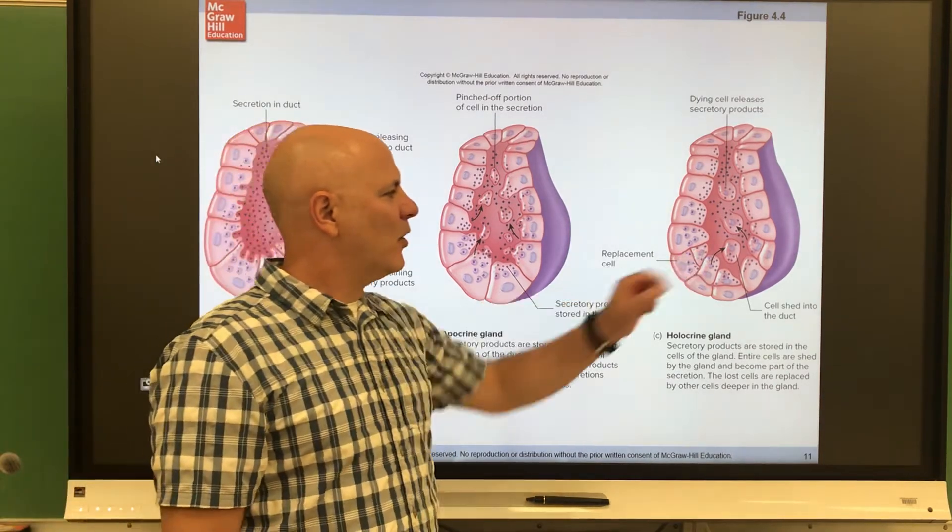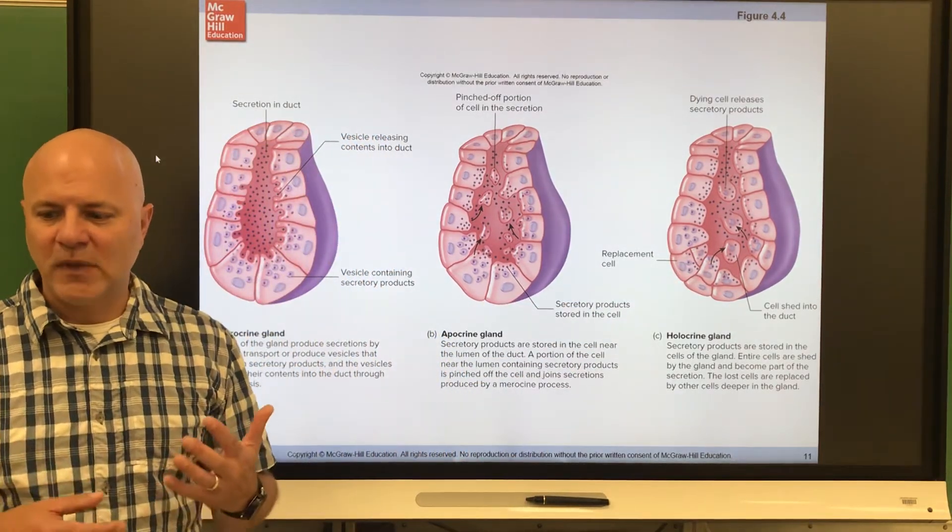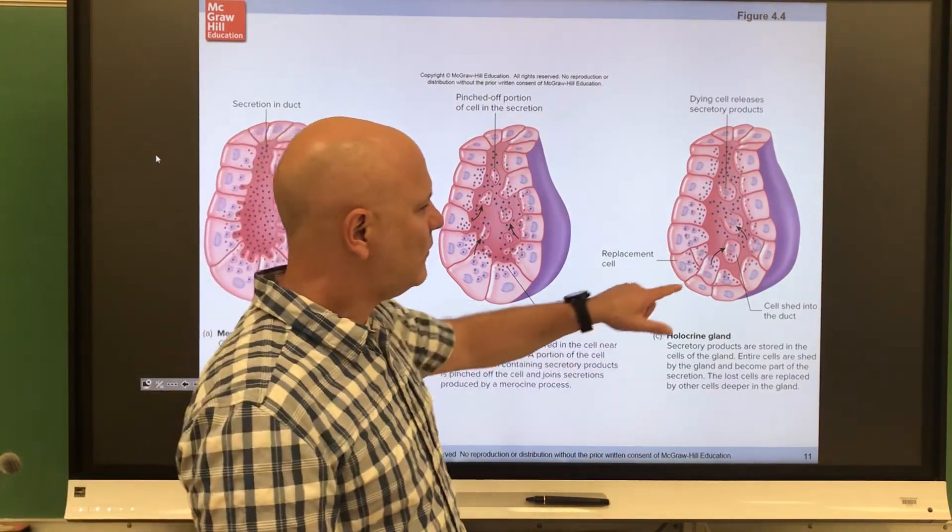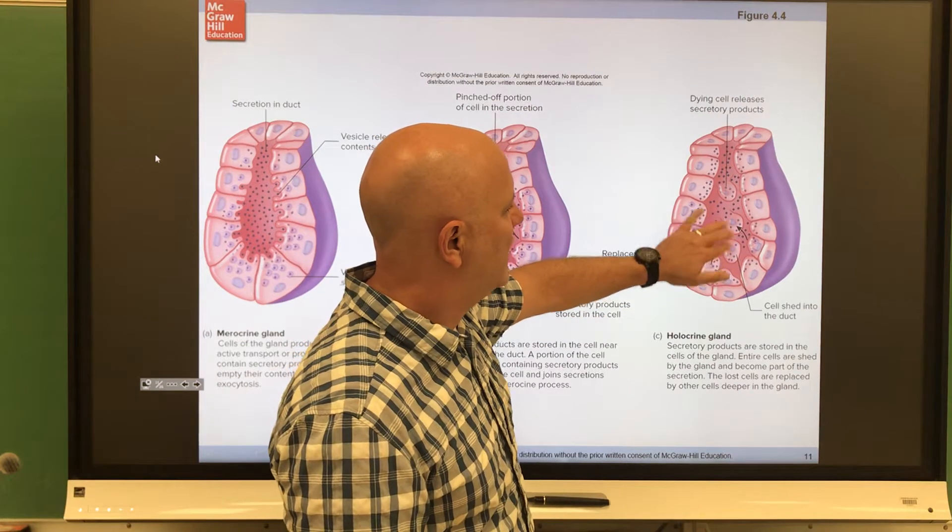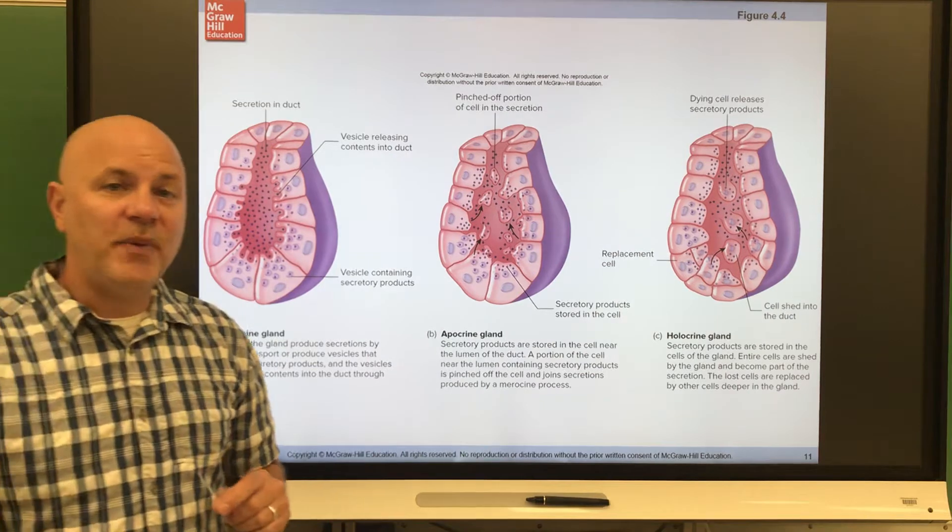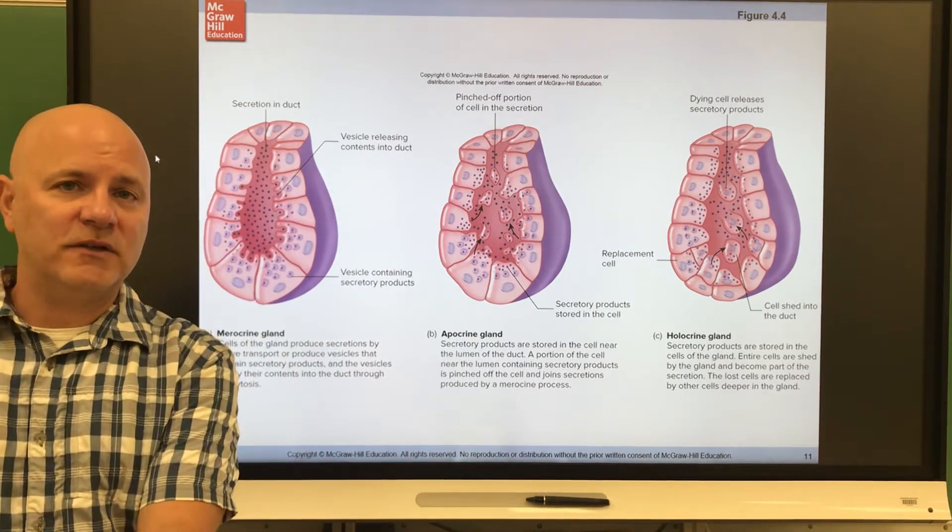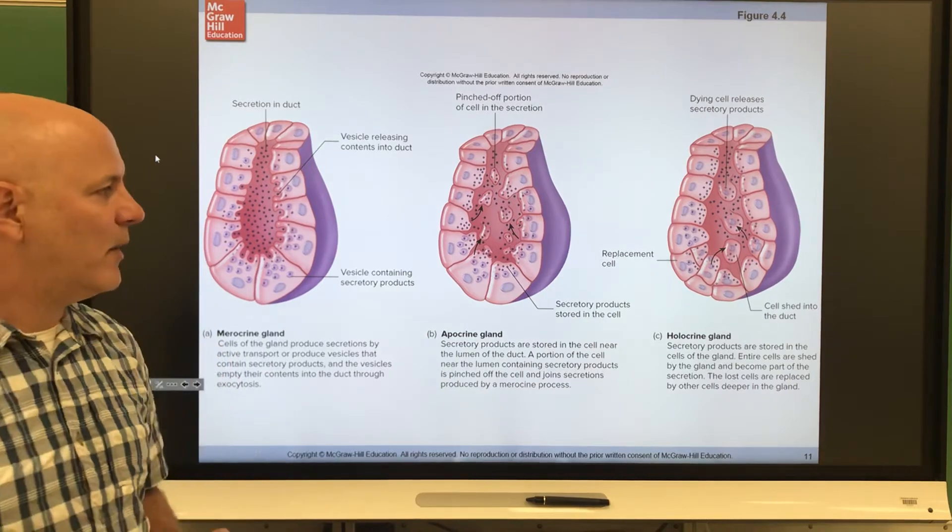And lastly are holocrine glands. So holocrine glands, think of hollow, whole cells. So these are glands that release entire cells. So here the cell fills up with the product and then the cell is released and then the cell breaks up releasing that product afterwards. And so sebaceous glands, those are the oil glands associated with hair follicles, are a type of a holocrine gland.